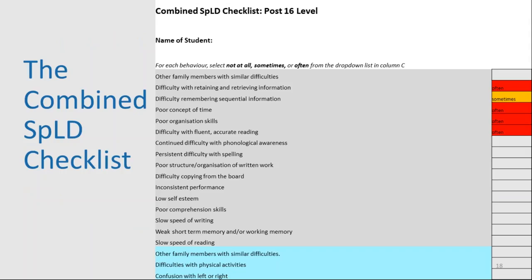The combined SPLD checklist is a tool we've developed that pulls together all the behaviours and indicators associated with a range of SPLDs — including dyslexia, DCD, ADHD, and ASD. The aim is to discourage educators from seeing students in terms of one particular SPLD. For example, rather than saying 'Joanne is dyslexic, so she'll have difficulties with X, Y and Z,' we want educators to build a unique picture of students' needs in which a number of different SPLDs may overlap. In other words, we want to see our students in terms of neurodiversity.